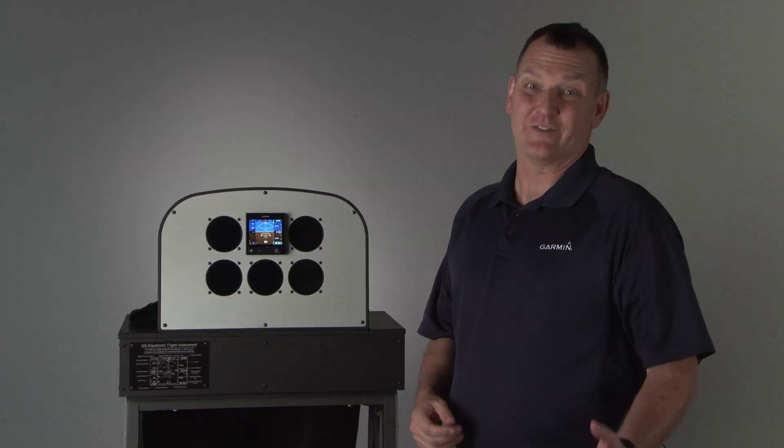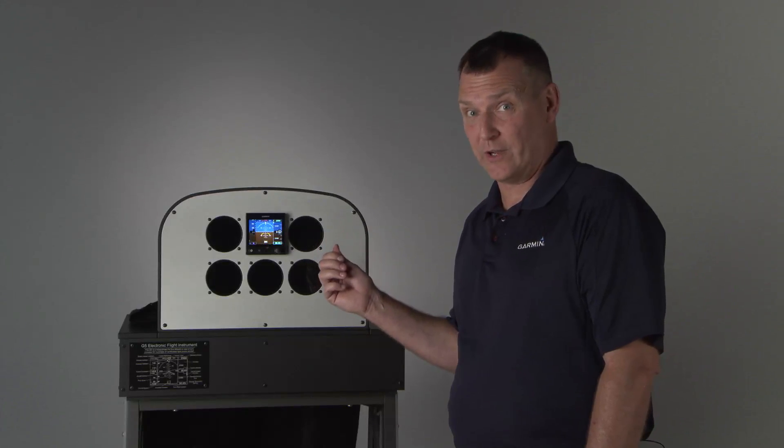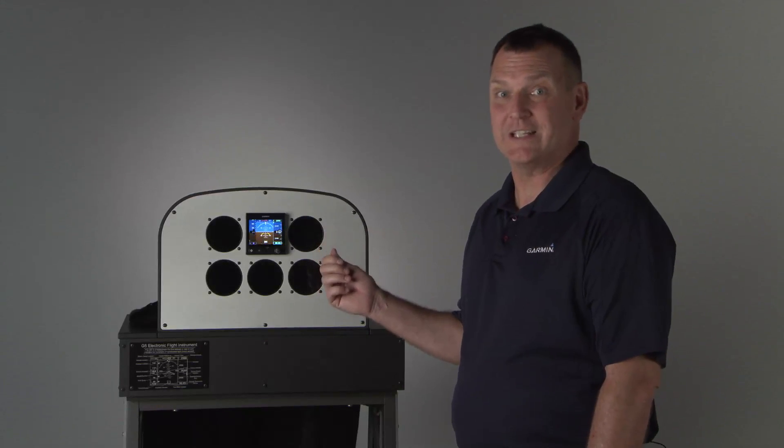Now, as an alternative to getting the optional antenna, you can hook the G5 directly up to a GNS 430 WAAS, 530 WAAS, or GTN navigator.